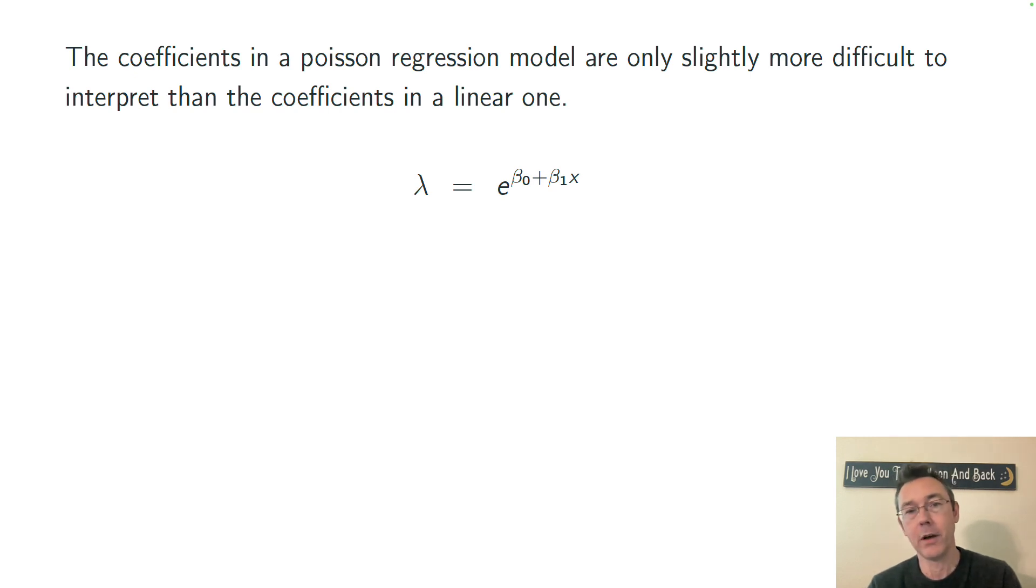The coefficients in a Poisson regression model are only slightly more difficult to interpret than the coefficients in a linear one. If we take lambda equals e to the beta 0 plus beta 1 x, and use some rules of exponents to write that as e to the beta 0 times e to the beta 1 to the x power, we can get some interpretations very directly. If we plug in x equals 0, that second exponential goes away, and this tells us that the predicted mean count when x is 0 is e to the beta 0. So while beta 0 is not an intercept term exactly, it is giving you information about an intercept. The predicted mean count is just the exponential of that coefficient.